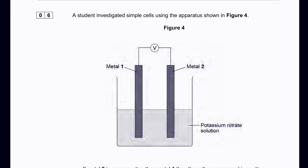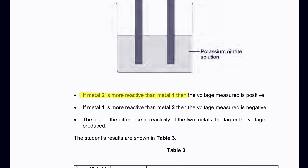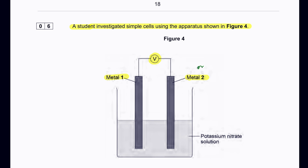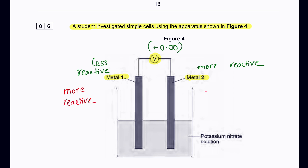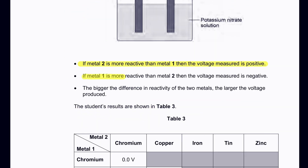A student investigated simple cells using the apparatus shown in figure four — you can see metal one and metal two with a voltmeter in between. If metal two is more reactive than metal one, the measured voltage is positive. If metal one is more reactive and metal two is less reactive, we get a negative value.